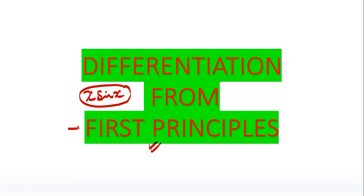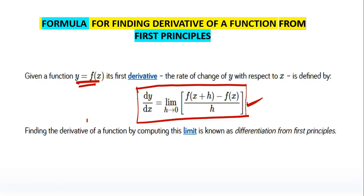Let's know what is the meaning of first principle — what is its formula and what are the steps. Let y = f(x) be a given function. Then the rate of change of y with respect to x is defined as: dy/dx = lim(h→0) [f(x+h) - f(x)] / h. This is also denoted by f'(x).